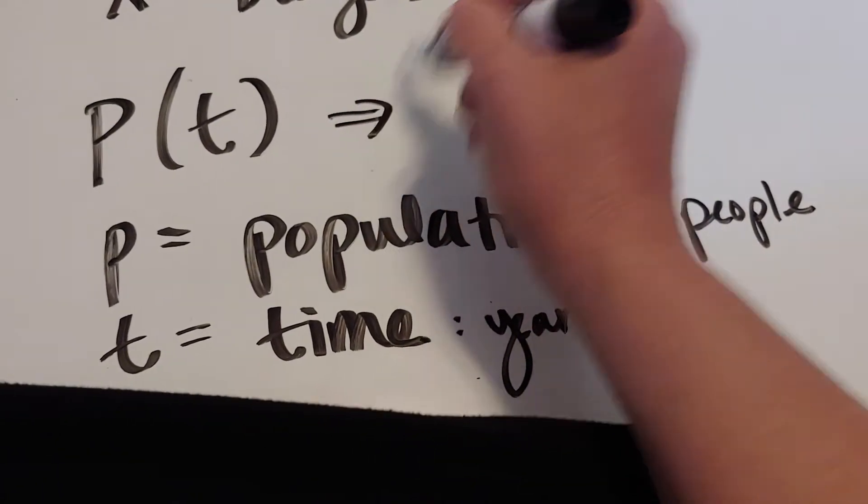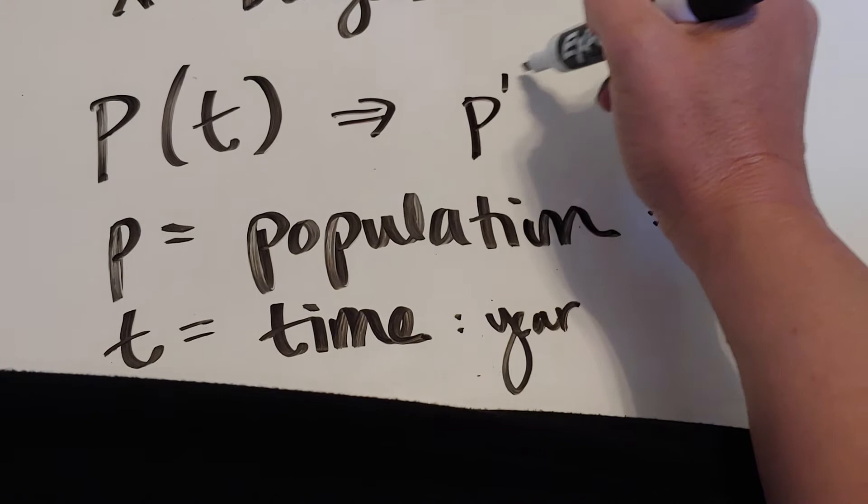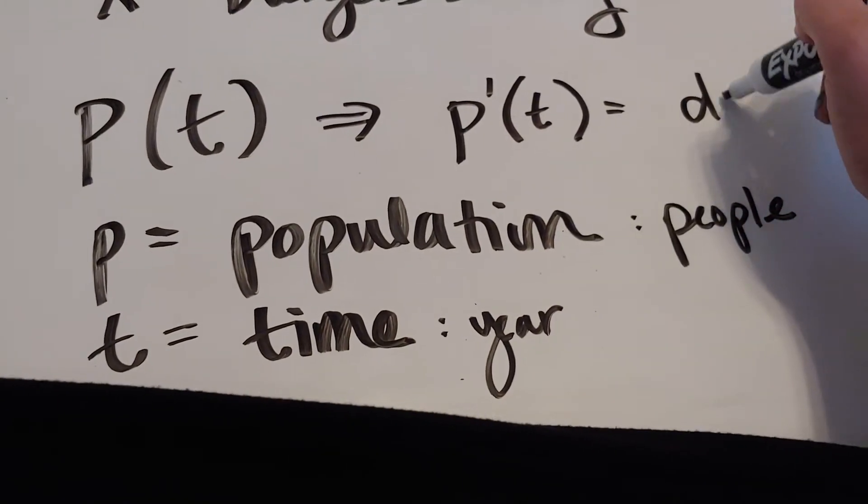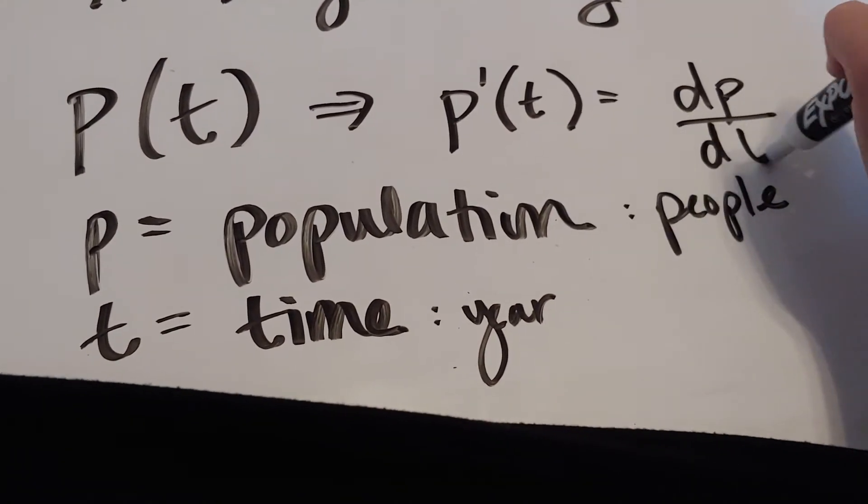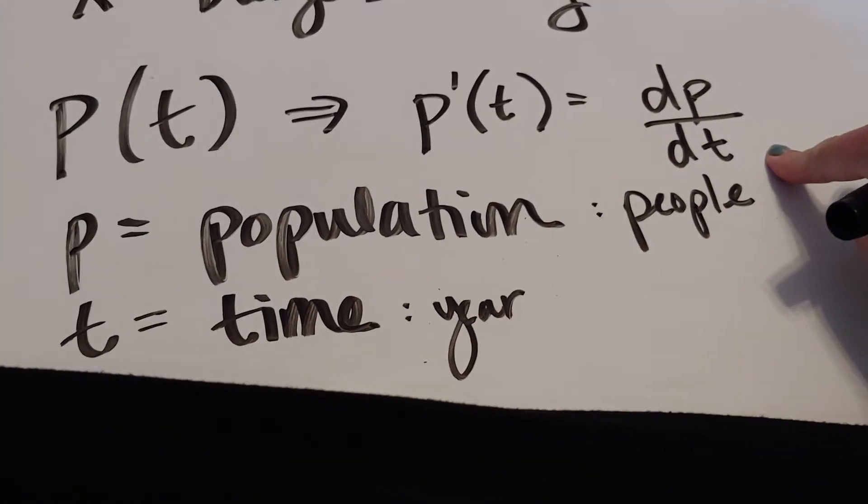So if I have this function that models the population, and I find p prime of t, what it is doing is I'm finding dp dt.